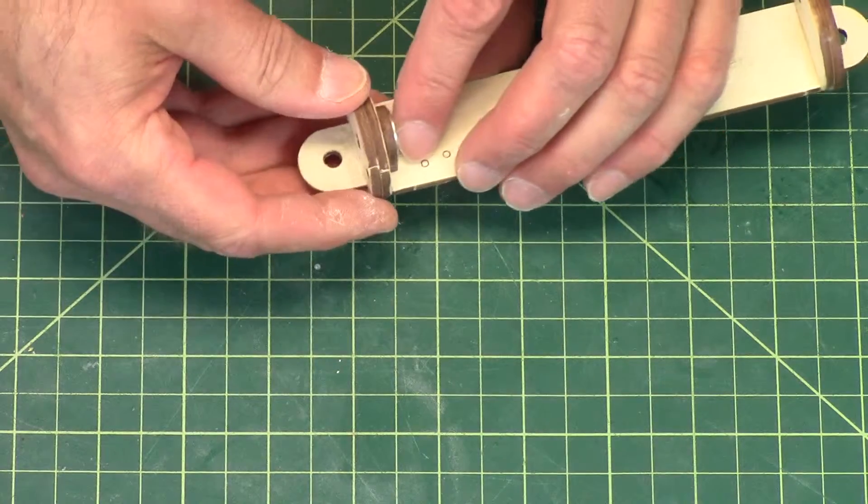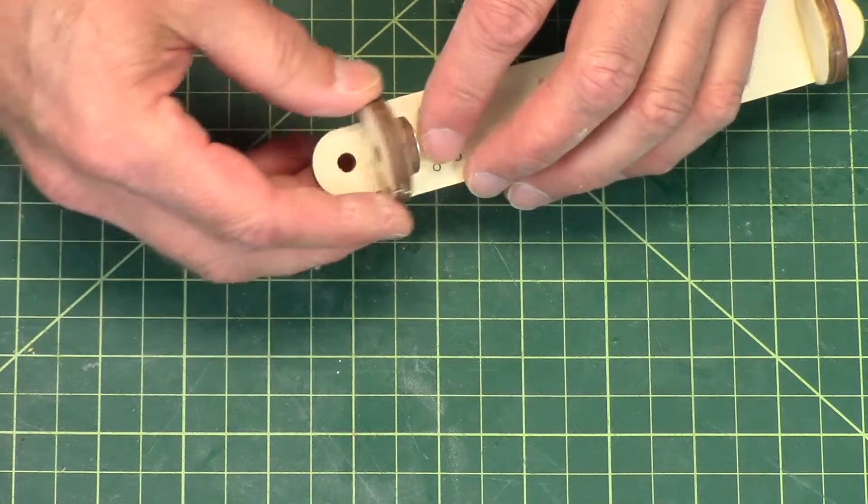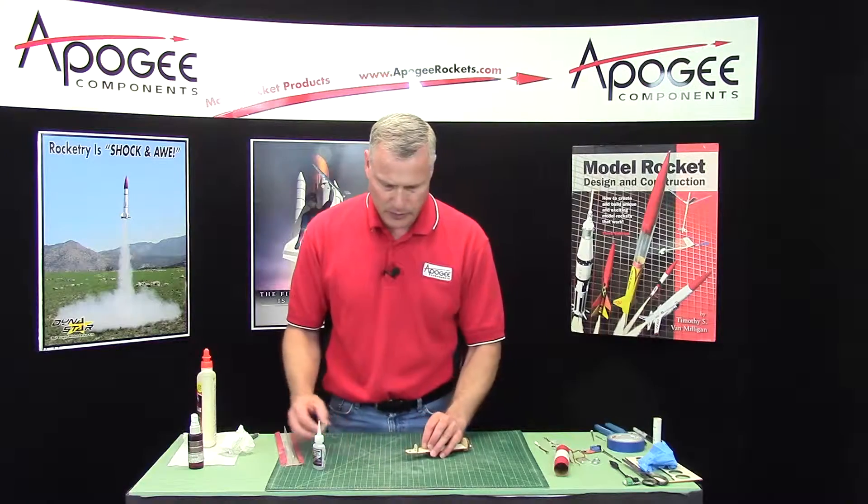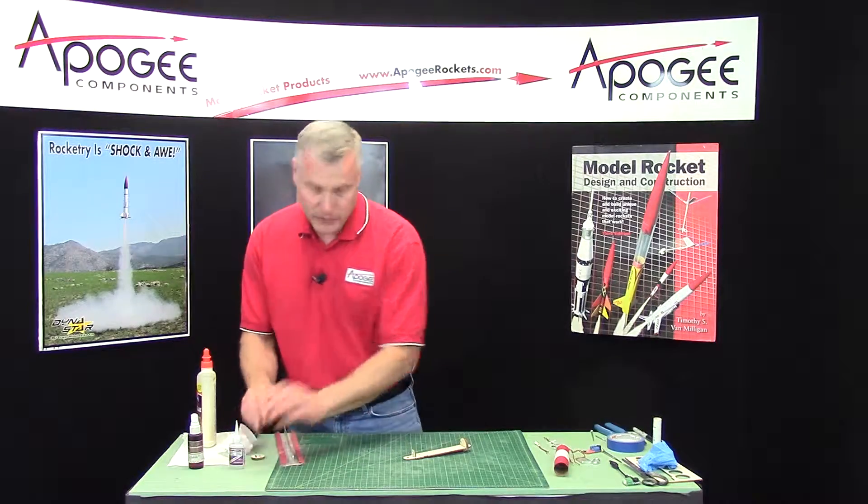Make sure no glue comes out that end. And while it's still wet, again, double check it. Make sure that it slides easily into the hole right here. Just like that. Okay, that was simple.